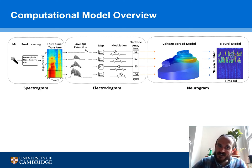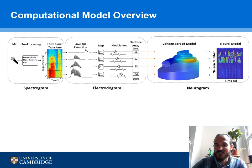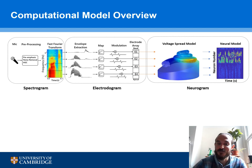We then send those biphasic pulses to a finite element model of voltage spread, and by extracting the voltage at different points in the cochlea we can use it to activate neural models. We model 1500 different neurons along the length of the cochlea for a large corpus of speech, and then we can generate a lot of neural activation patterns for speech that is labeled by phoneme.